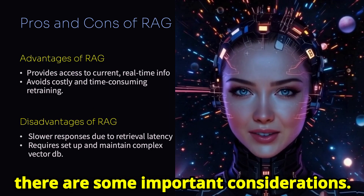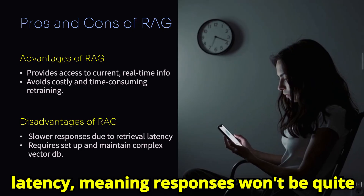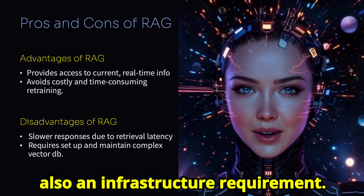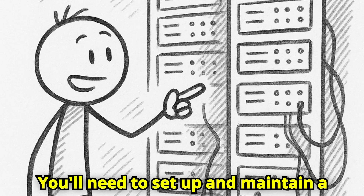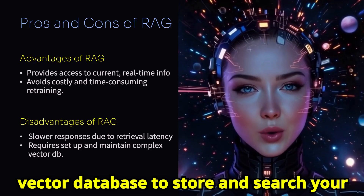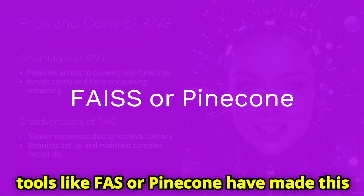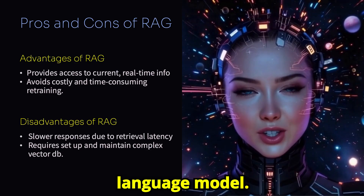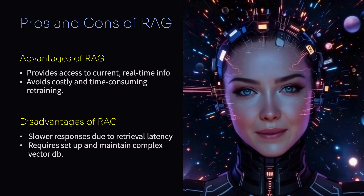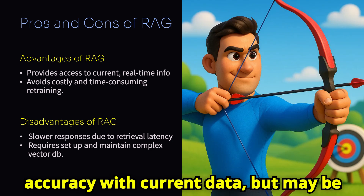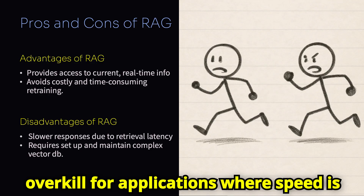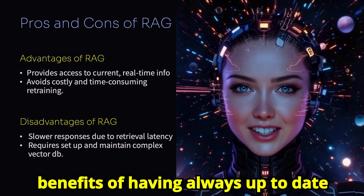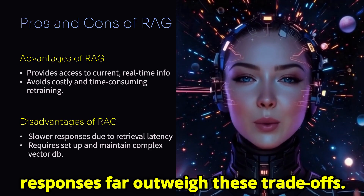However, there are some important considerations. The retrieval step does introduce some latency, meaning responses won't be quite as instantaneous as with a standalone LLM. There's also an infrastructure requirement — you'll need to set up and maintain a vector database to store and search your documents efficiently. While tools like FAISS or Pinecone have made this easier, it's still an additional system to manage. RAG is incredibly powerful when you need accuracy with current data, but may be overkill for applications where speed is paramount or the information is relatively static.